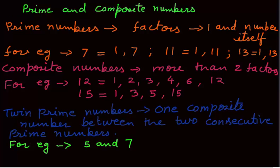For example, 5 and 7. There is one number between 5 and 7, which is 6, and 6 is a composite number.